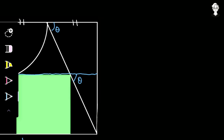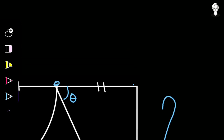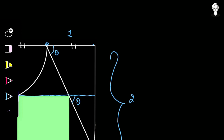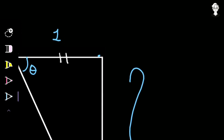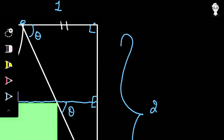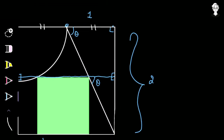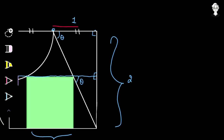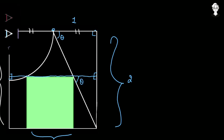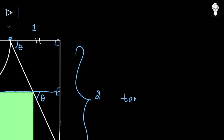The side of the biggest square is 2, so here also it equals 2. Since this is the midpoint, the length from here to here becomes 1. In the biggest right-angle triangle, the angle is 90 degrees. The value of tan theta is opposite over base — opposite is 2 and base is 1 — so tan theta equals 2.